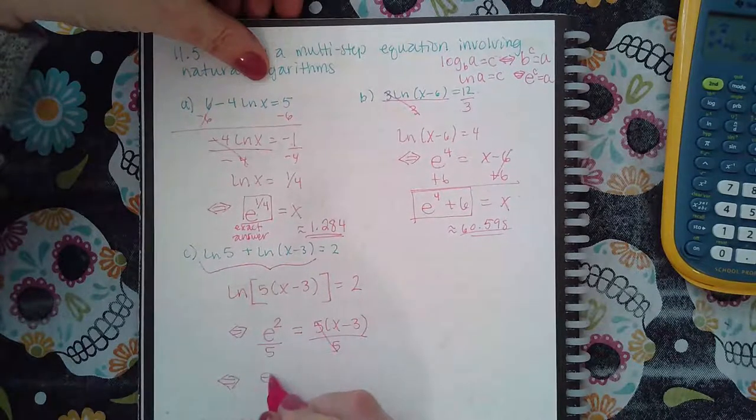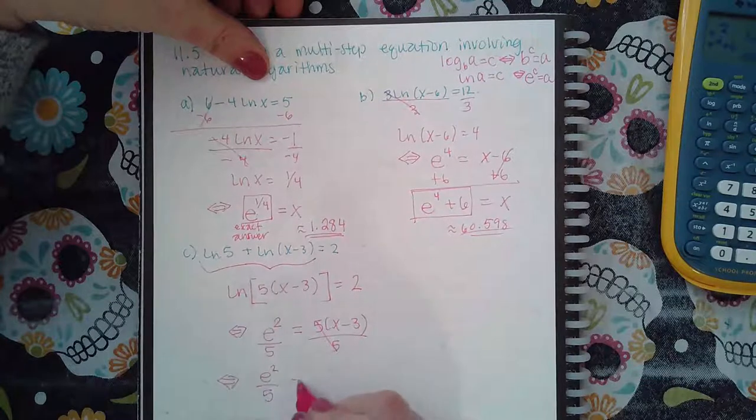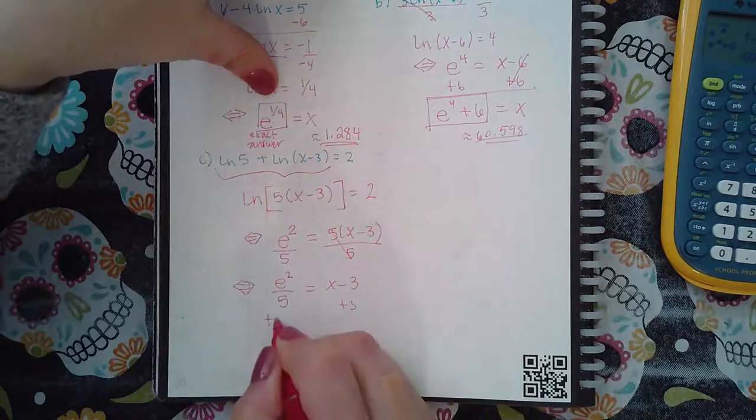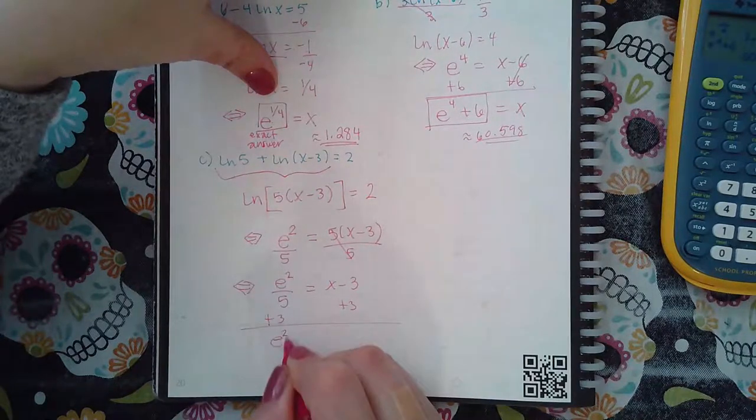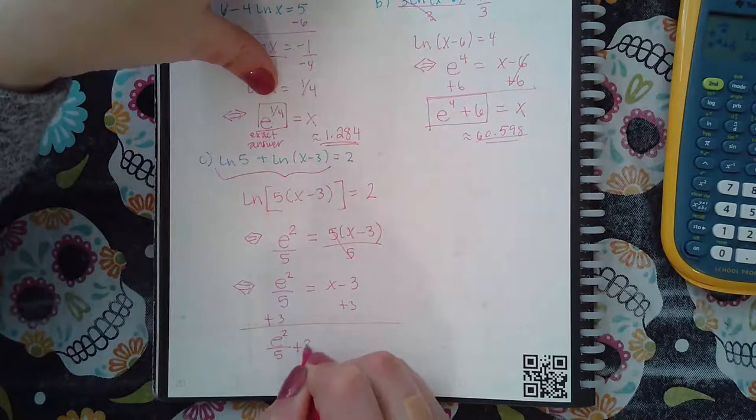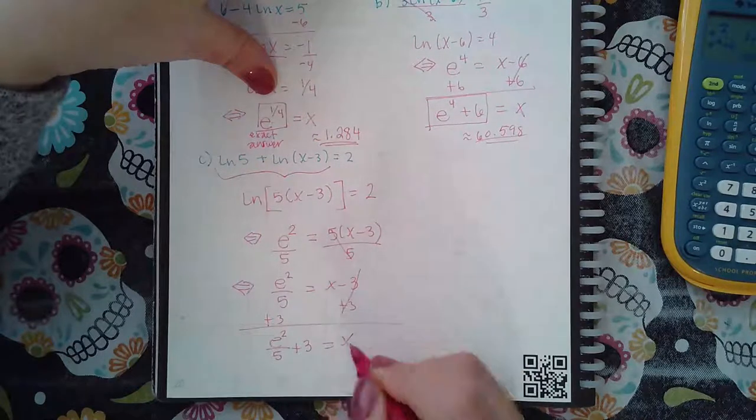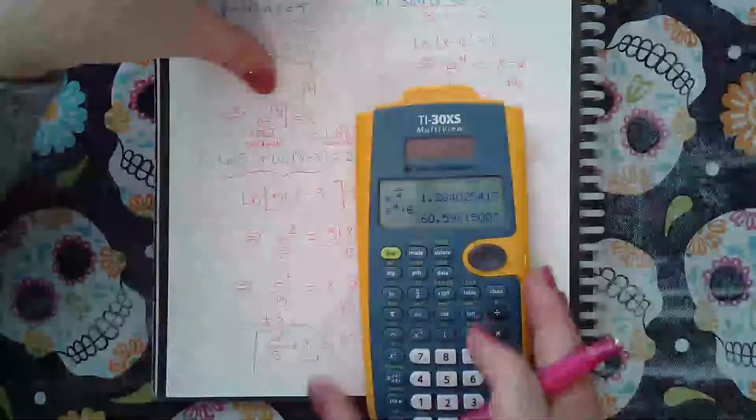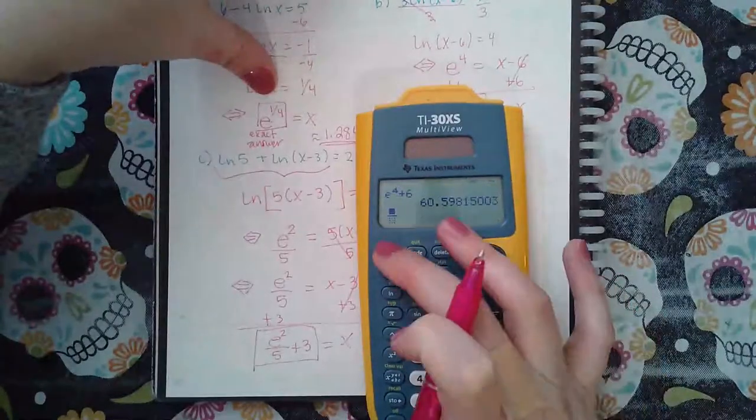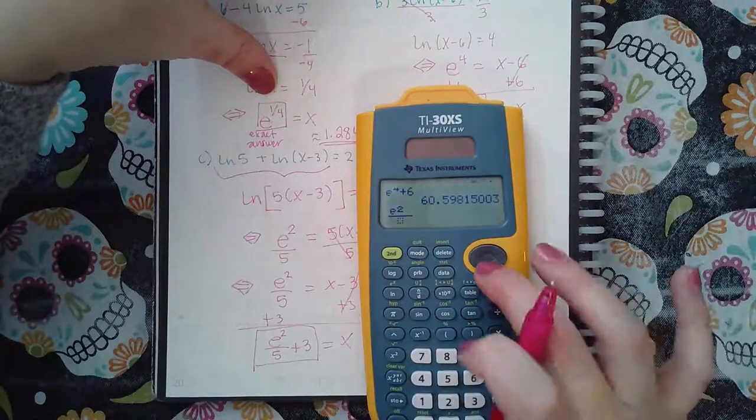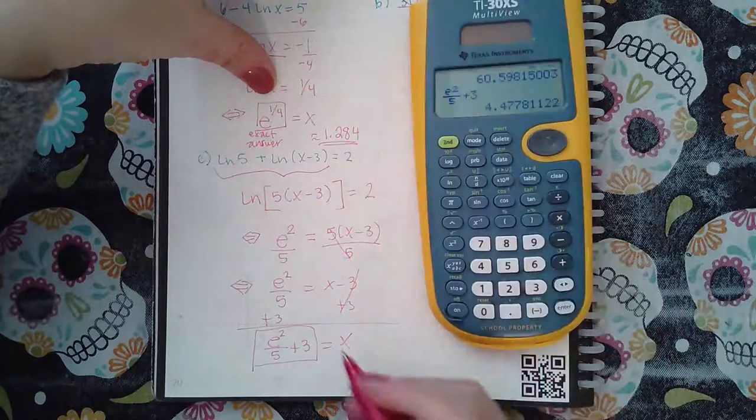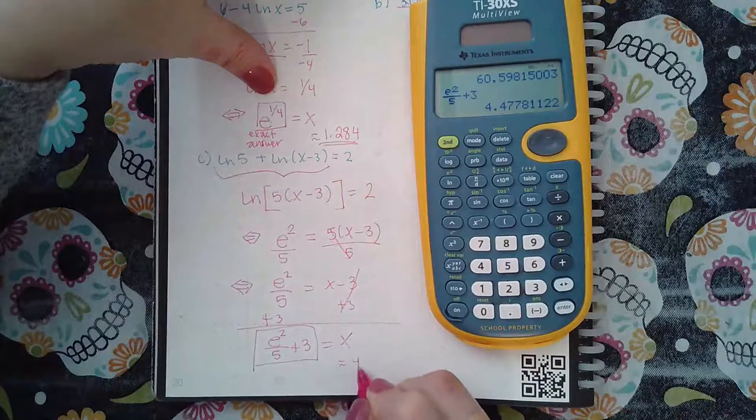So I get e squared divided by five equal to x minus three, and then I would add three to both sides. So I get e squared divided by five plus three equal to x. So again this is my exact answer, but if they want the decimal you type it in your calculator and I get 4.478.